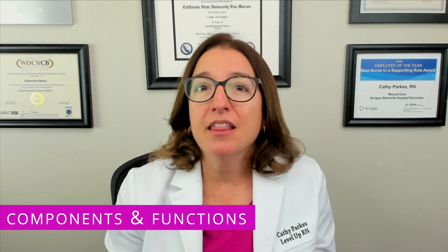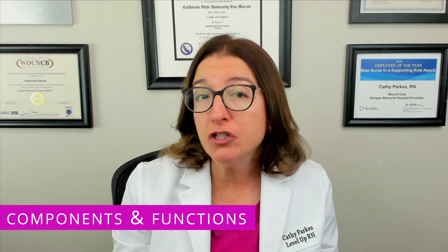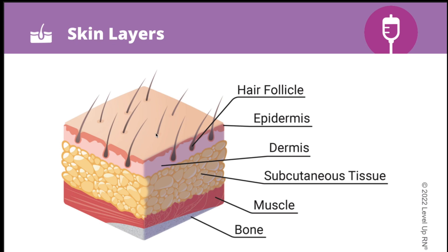It's important to understand the different layers of skin and tissue, particularly when talking about pressure injury staging as well as burns. The top layer of skin is the epidermis — 'epi' means upon, so the epidermis is the layer that sits upon the dermis. The dermis is the next layer down, and it contains connective tissue and appendages such as hair follicles, sweat glands, and sebaceous glands.